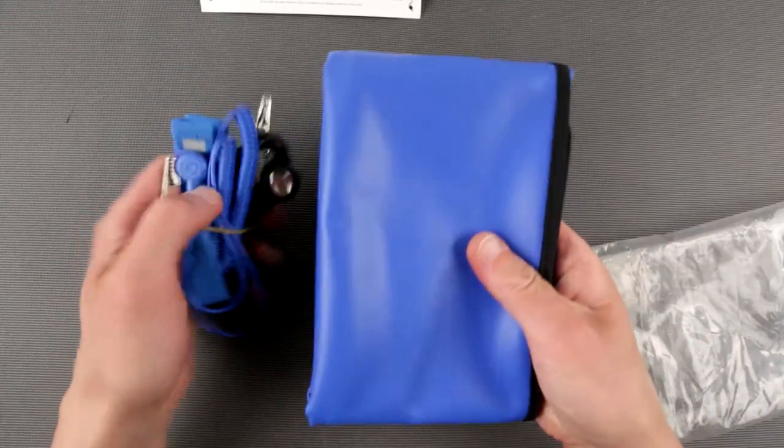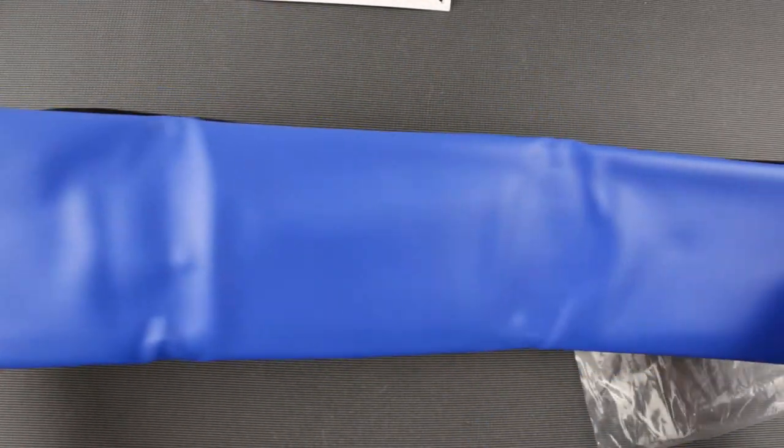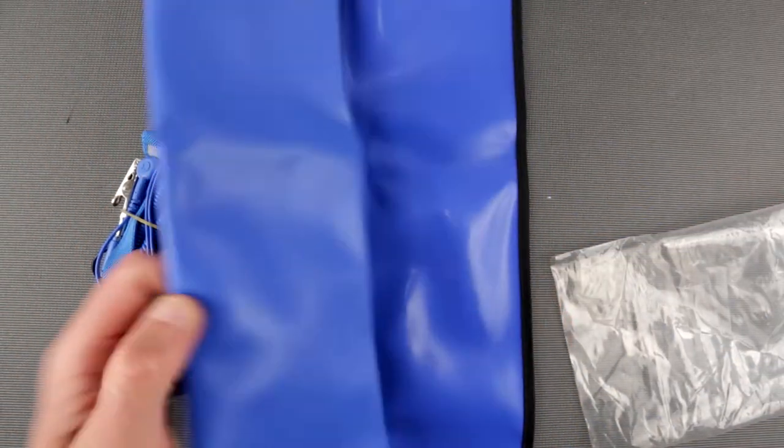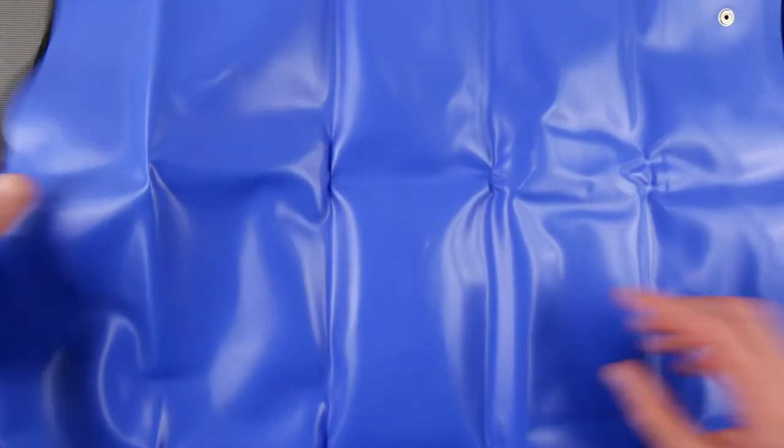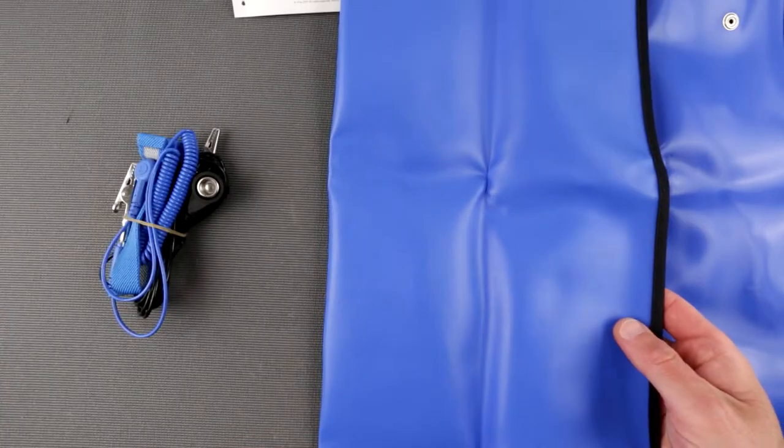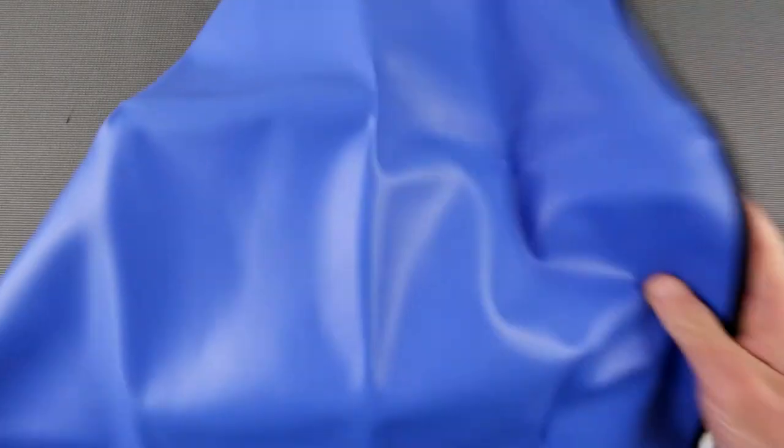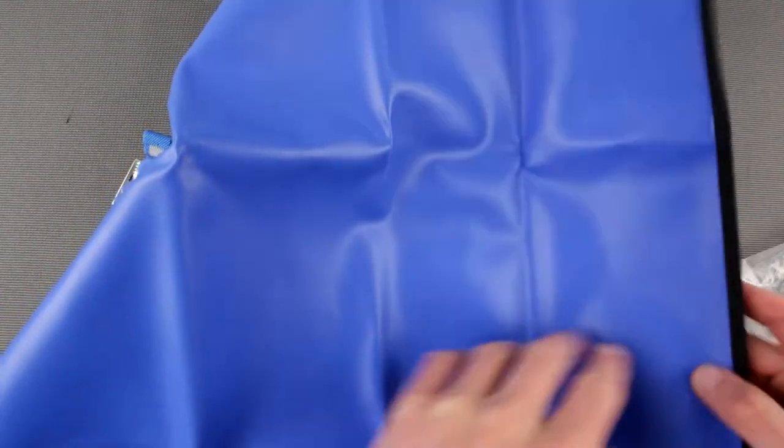All right, so here is the mat itself. It's pretty big, I like it. This more matte side is the good side, this more shiny side is the back side. Looking good already. Smells plasticky. The only downside is that it's all crinkled, but whatever.